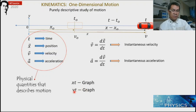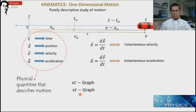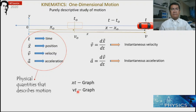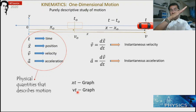Another graph is the v-t graph, which means velocity versus time. Collecting all velocities for every time, we can create a graph. The slope of the v-t graph is acceleration. If the line is inclined positive, the velocity is increasing. If the line is horizontal, there is no change in velocity — the velocity is maintained. If the line is open to the left, the velocity is decreasing.